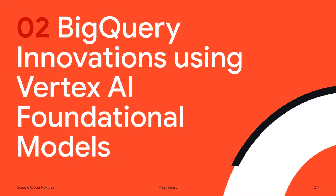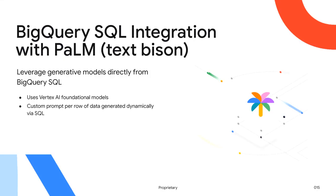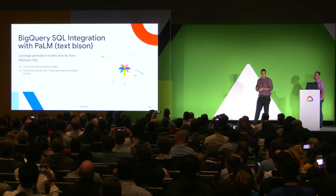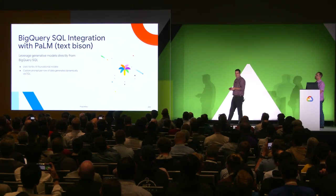Now I want to get into some of the innovations we've done with Vertex AI foundational models in BigQuery. We've extended BigQuery SQL capabilities with LLMs. There's now a remote SQL function you can use to run a SQL query that will use the Vertex Text Bison model on your BigQuery data. Today, Text Bison is backed by Google's PaLM 2 large language model, but over time those underlying models will continue to evolve, so you'll always have access to Google's latest AI innovations.